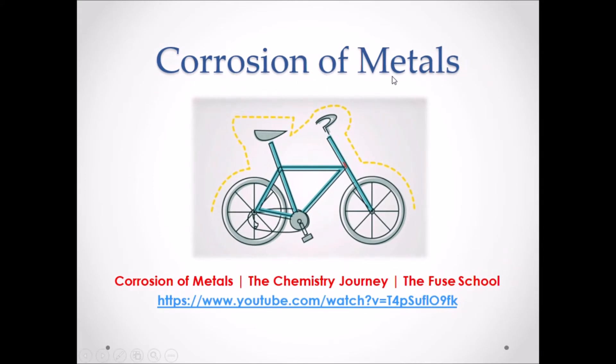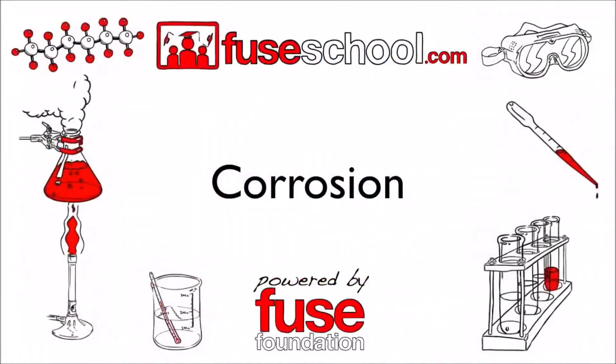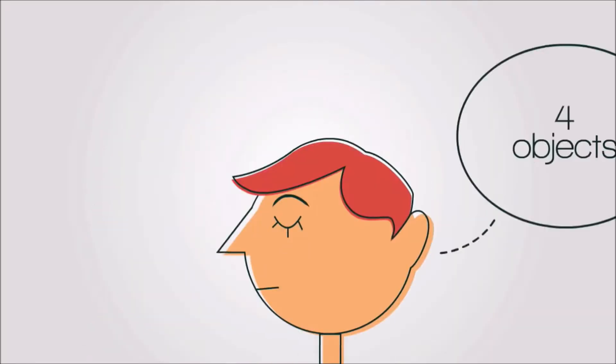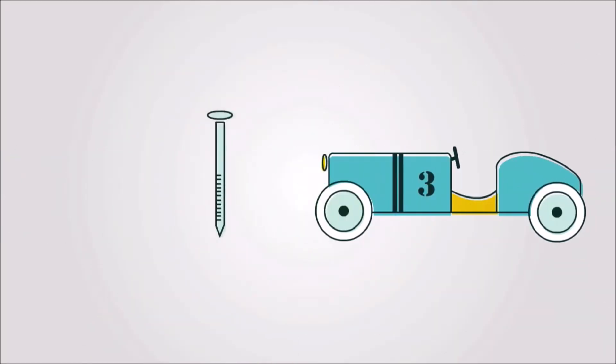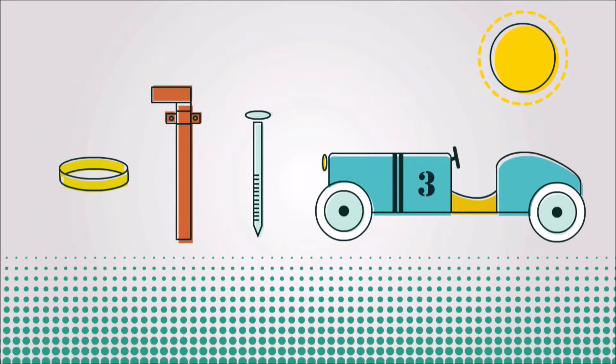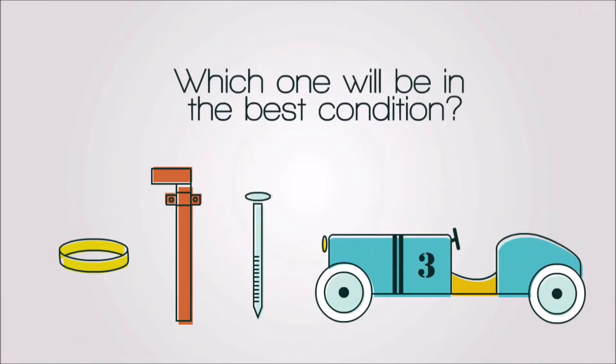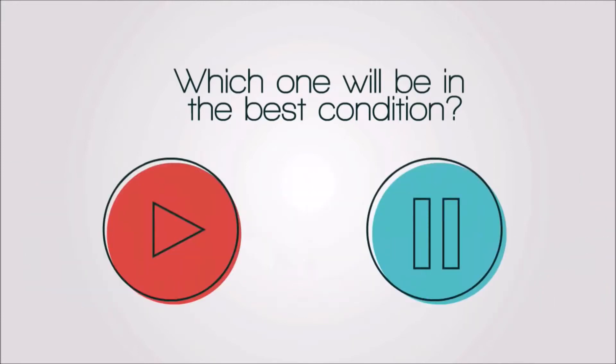Corrosion of metals. In this video we are going to learn about corrosion. Imagine four objects: an aluminum toy, an iron nail, a copper pipe, and a gold ring are left out in the open for many years. Which of the four materials do you think will be in the best condition when they are rediscovered? Pause, think, and continue when ready.